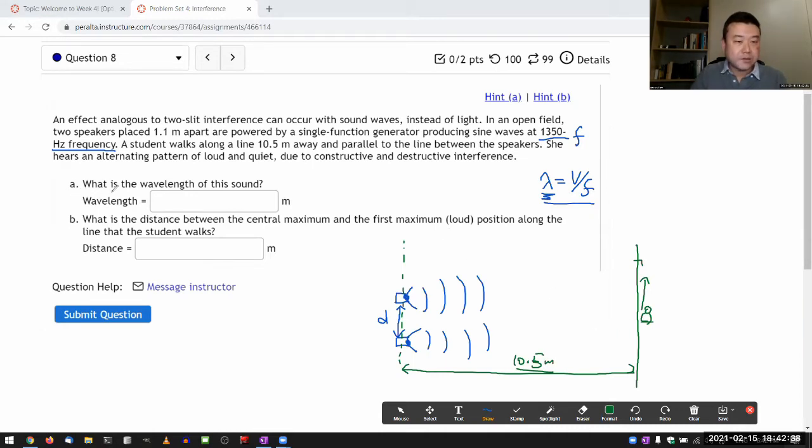Part A is asking a question that you need to figure out anyway. And part B asks for the distance between the central maximum and the first loud position - this delta y. You can figure that out using the same condition for first-order interference maximum for double-slit interference.